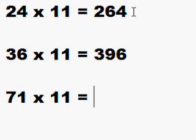71 times 11, same thing. Write down 71, and in between the 7 and 1 you put 7 plus 1, which happens to be 8. So 71 times 11 is 781. Very easy, of course, when you know how!